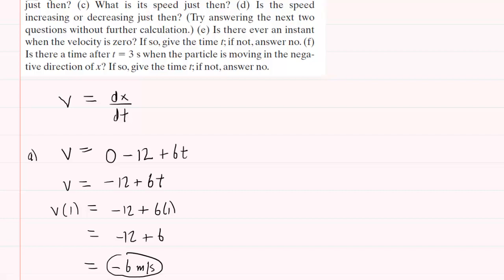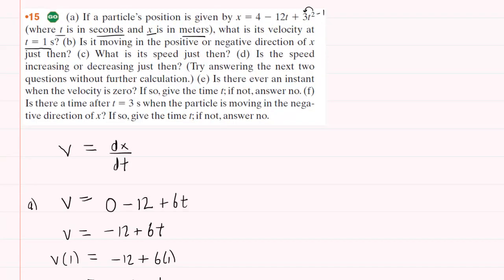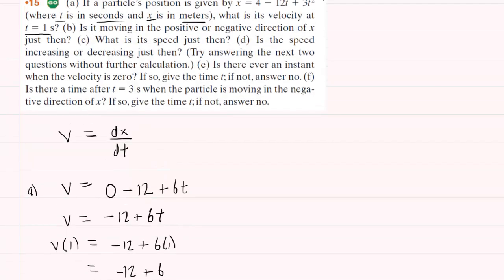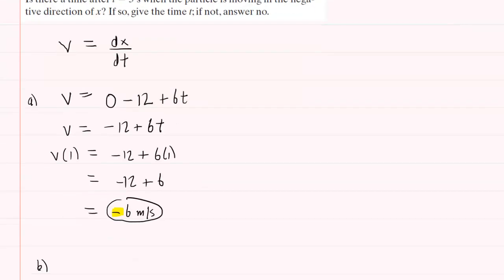Now, on to part B, which asks us: is the particle moving in the positive or negative direction of x just then? We can see that the velocity is negative as computed in part A. If the velocity is negative, then we know the particle would be moving to the left. So when part B asks whether it's moving in the positive or negative direction, you simply have to look at the sign of the velocity. The correct answer for part B is the negative direction, simply because the velocity has a negative sign.